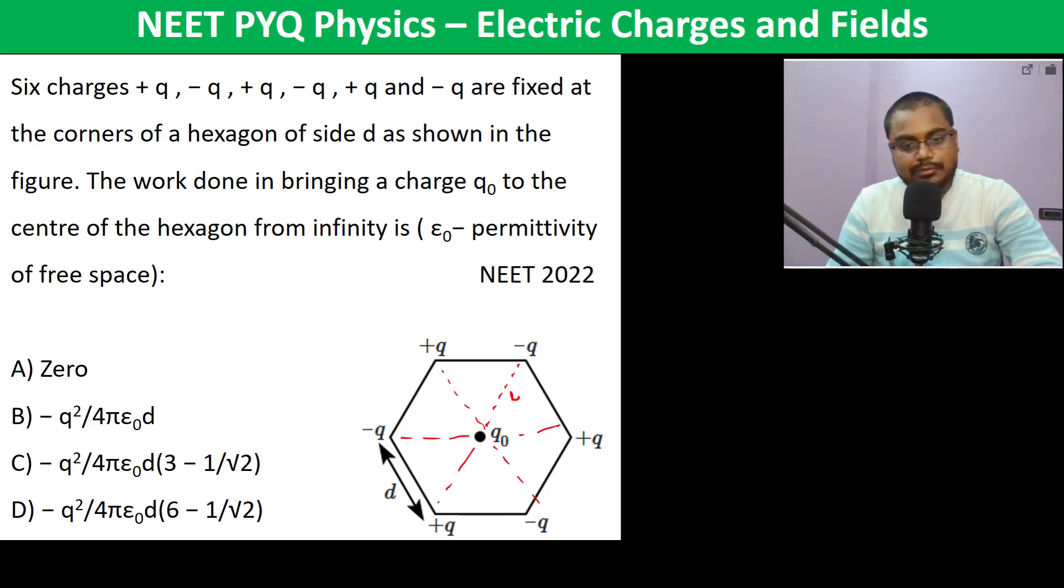We have to pair the charges. For this -q there is +q, so it becomes -kq₀/l plus kq₀/l. This way you see both are going to cancel because the charge is equidistant from all.